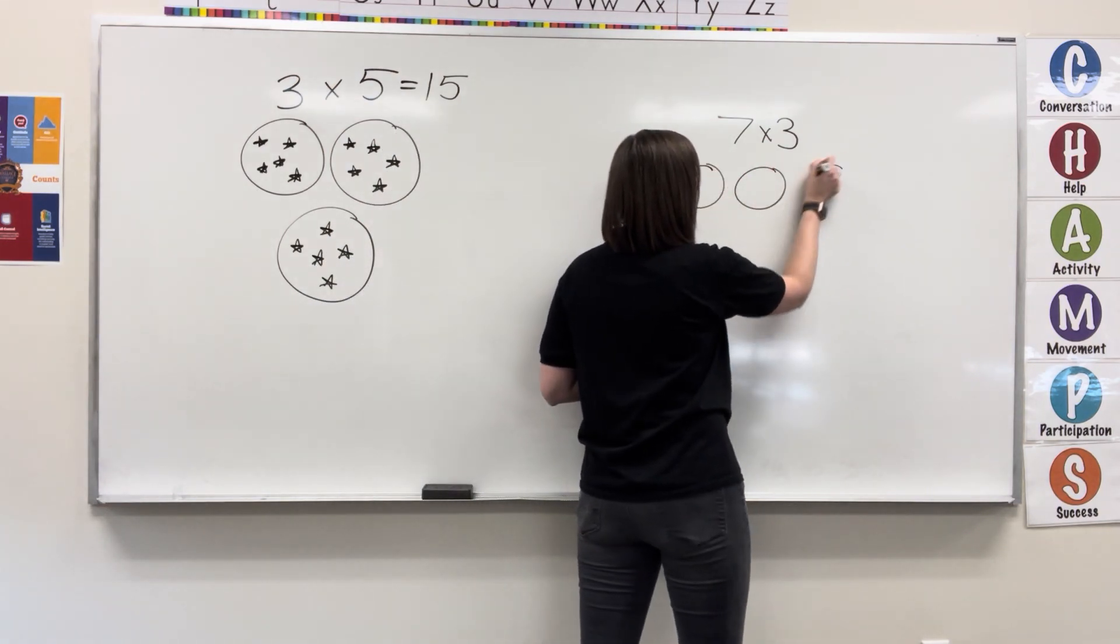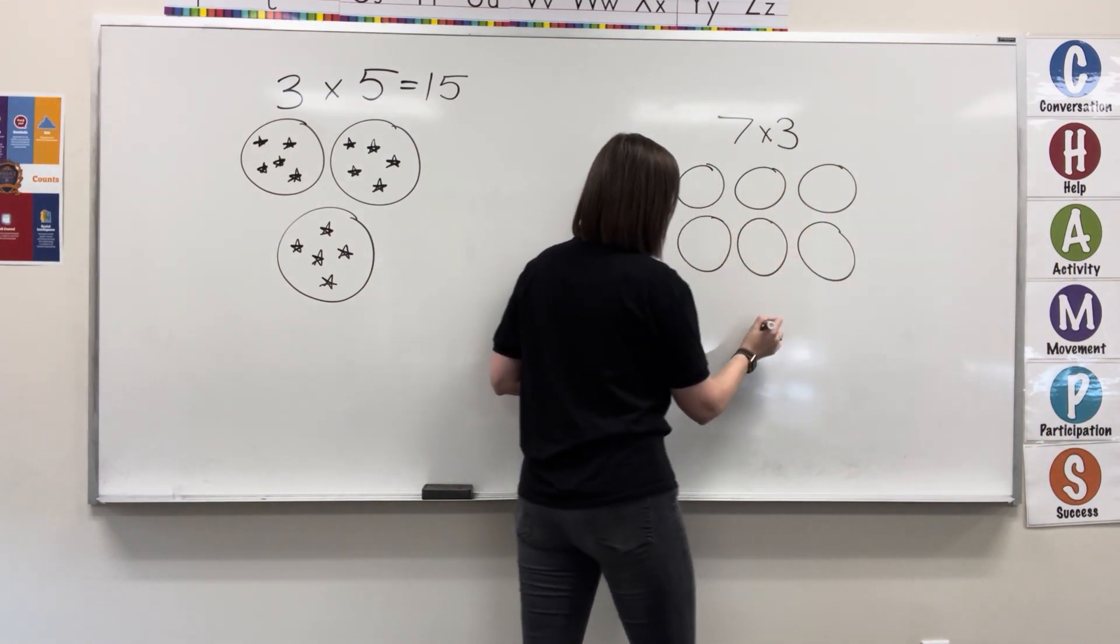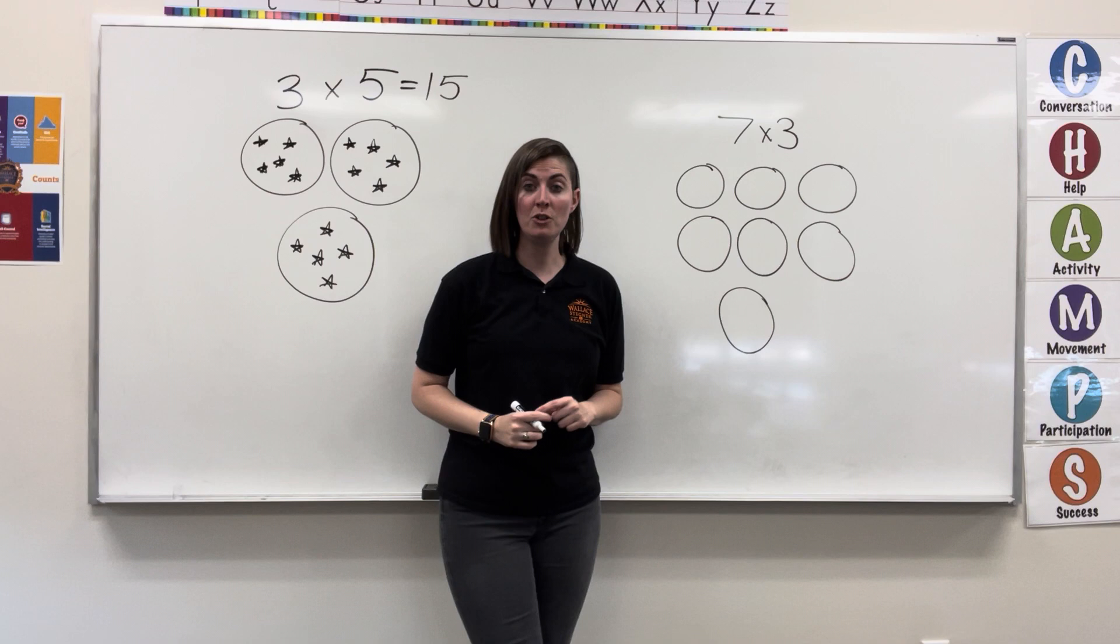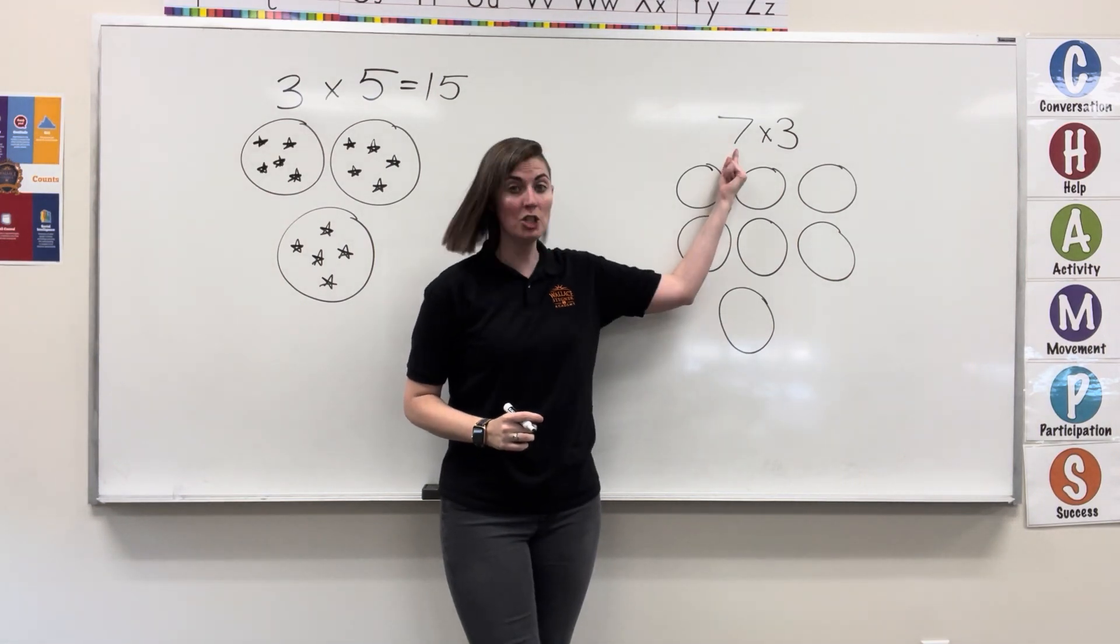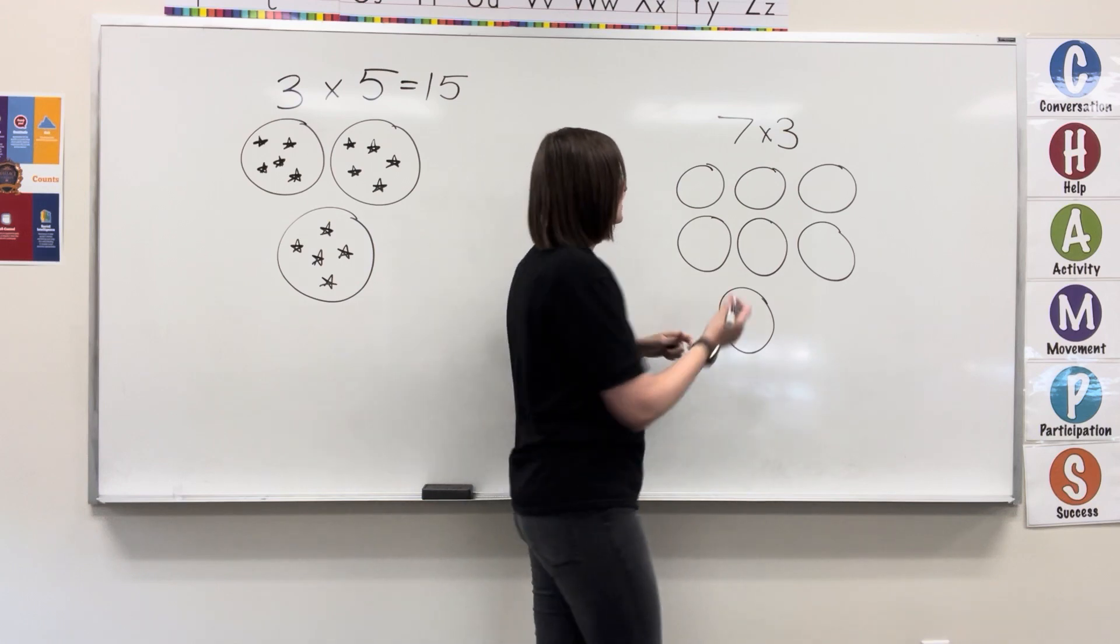One, two, three, four, five, six, seven groups. And inside each of those seven groups, there will be three symbols.